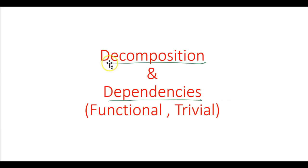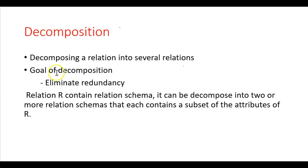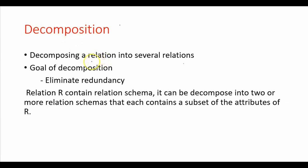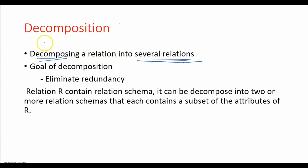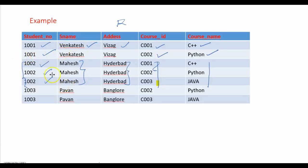We need to eliminate redundancy, and we normally use the decomposition procedure with the help of dependencies. So we are going to learn here these dependencies, how to decompose a relation, and what the dependencies are. The basic goal of decomposition is to eliminate redundancy. We need to decompose relation R, which contains redundancy, into several relations.